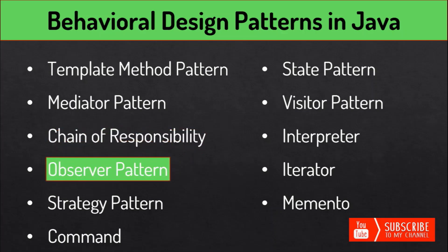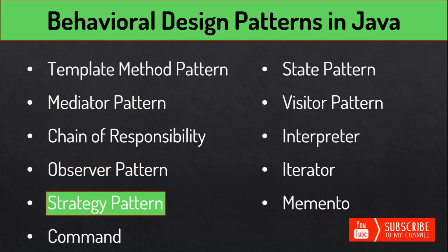The Observer design pattern deals with the state of an object and notifies us whether there is any change in the object state. The Strategy pattern is useful when there are multiple algorithms for a particular task and the client decides the actual implementation during runtime — we define multiple algorithms and allow the client to pass and use them as parameters. The Collections.sort method is one of the best examples, taking a Comparator as a parameter and sorting objects in different ways based on different implementations of the Comparator interface.